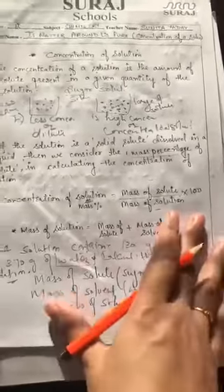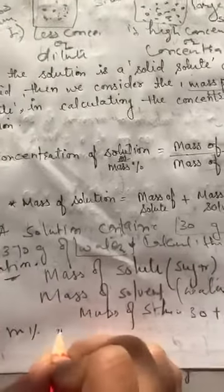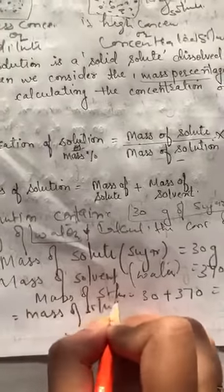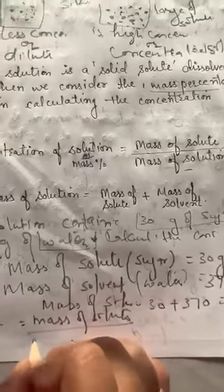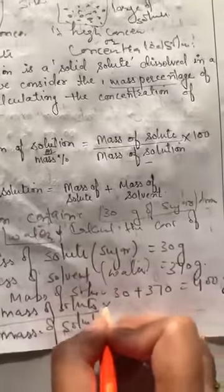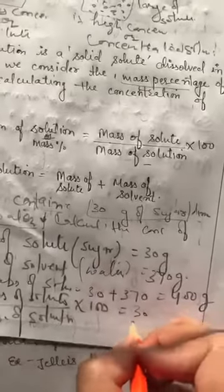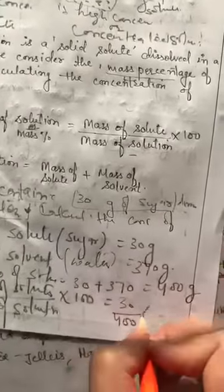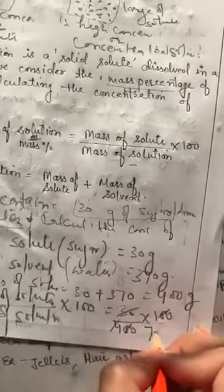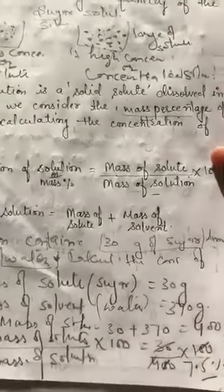Now put the values into the formula: mass percentage equals mass of solute upon mass of solution, multiplied by 100. The mass of solute is 30 and the mass of solution is 400. Calculating: 30 upon 400 multiplied by 100 gives 7.5%. So the answer is 7.5%.